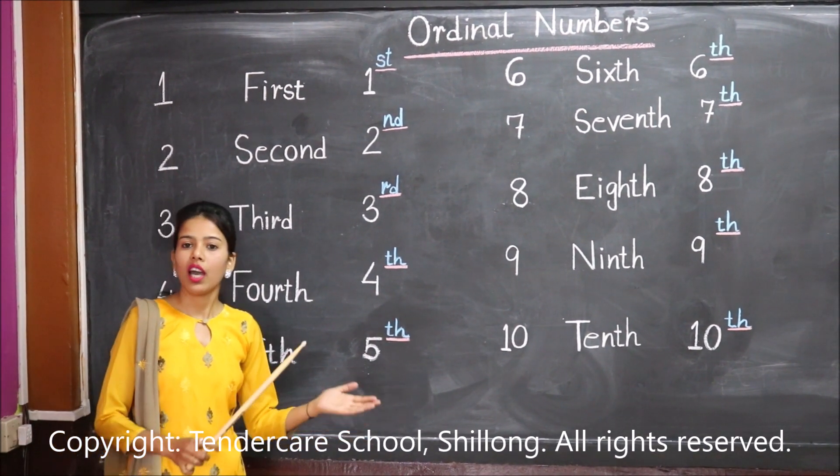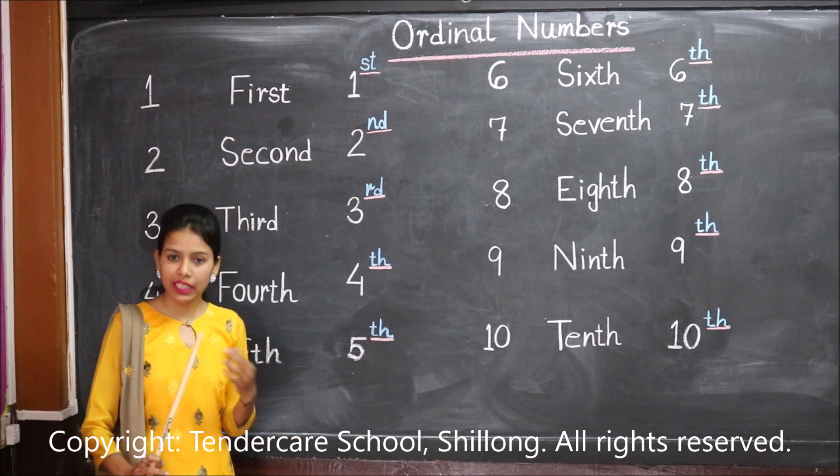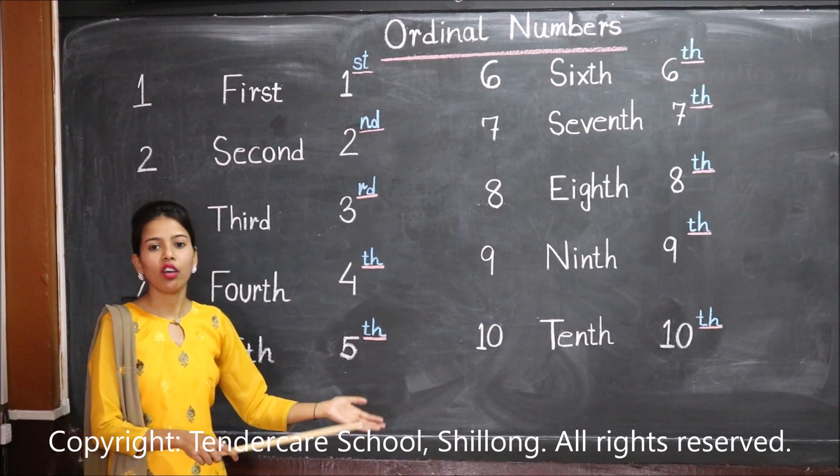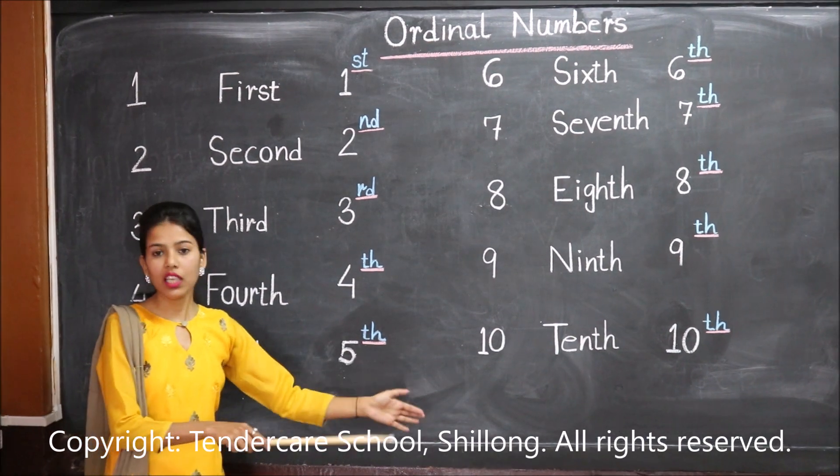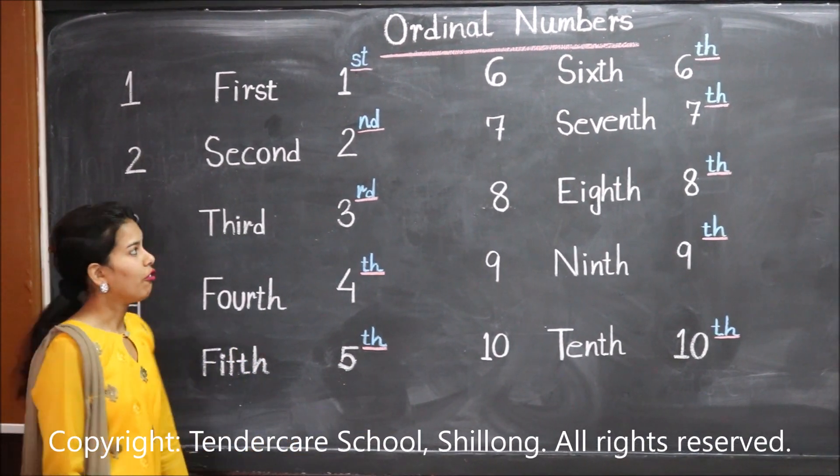Ordinal numbers are the numbers which tell us the position of an object or thing in a sequence. For example,